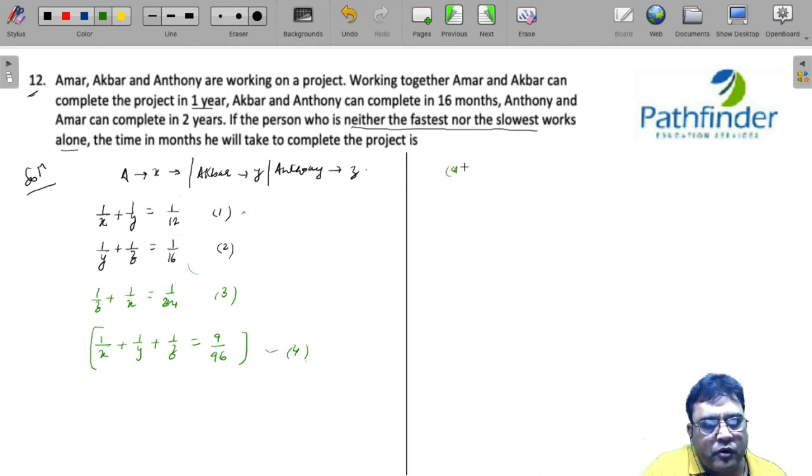So when I do 4 from 1, I will get 1 by Z is equal to 9 by 96 minus 1 by 12, which implies 1 by Z is equal to 1 by 96. So Anthony will take around 96 days.